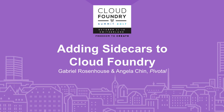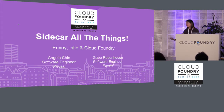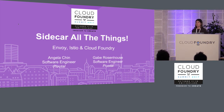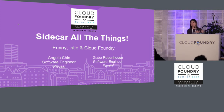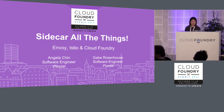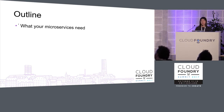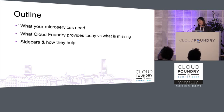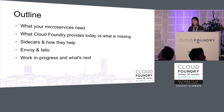Hi everybody, thanks for coming to our talk. I'm Angela and this is Gabe, and today we'll be talking about sidecarring all the things in Cloud Foundry — Envoy, Istio, and CF. Brief outline: first we'll talk about what your microservices need and what Cloud Foundry provides versus what it's missing, then look into sidecars and how they help, before delving into Envoy and Istio, and finally cap it off with a work in progress and what's next.